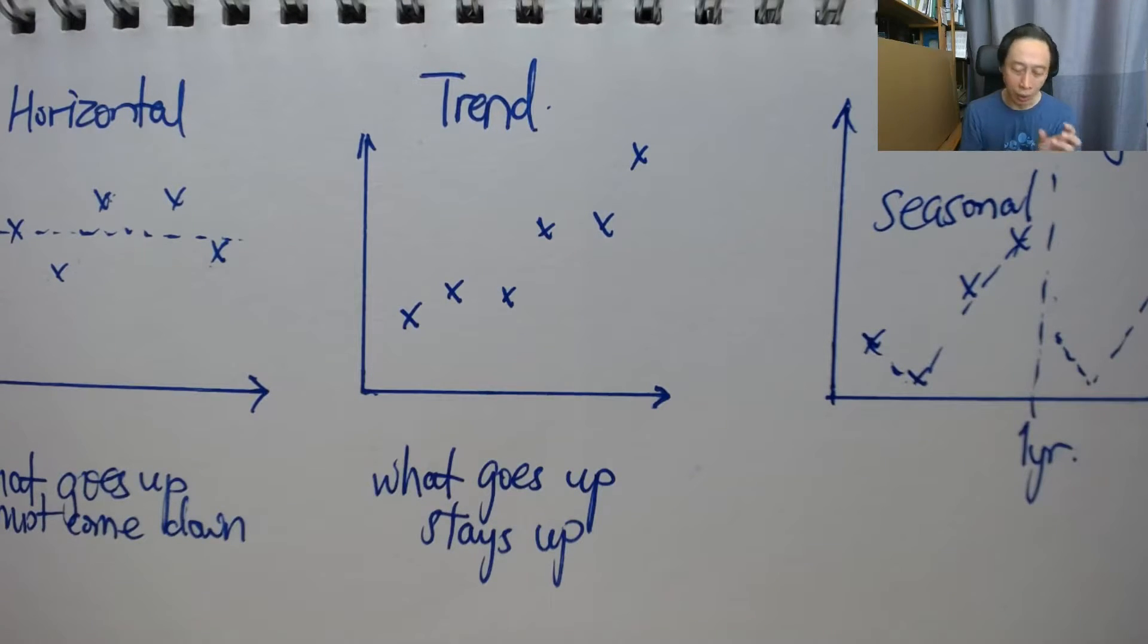And short-range, the range here, sorry, the word short is relative. Short in forecasting economy, in forecasting GDP for a country could mean one year. So the next value is one year away. And that's considered short-range because the data is all taken at one-year intervals.